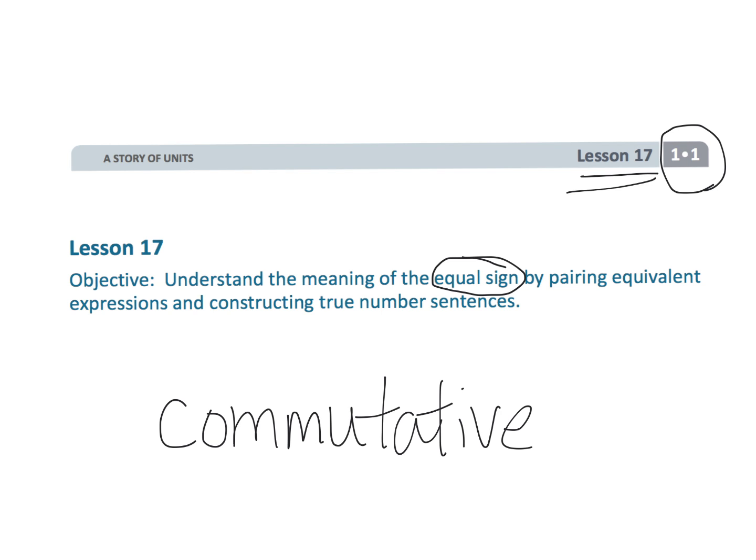The order does not change the sum. We're talking about two numbers, though of course we could add more than that. Ultimately, students are going to learn that addition is commutative, but not in this lesson quite yet. Right now, we're just focusing on the fact that two-number expressions can be equivalent to one another.